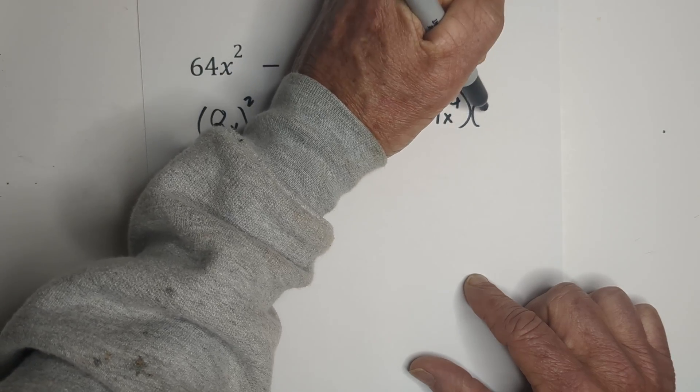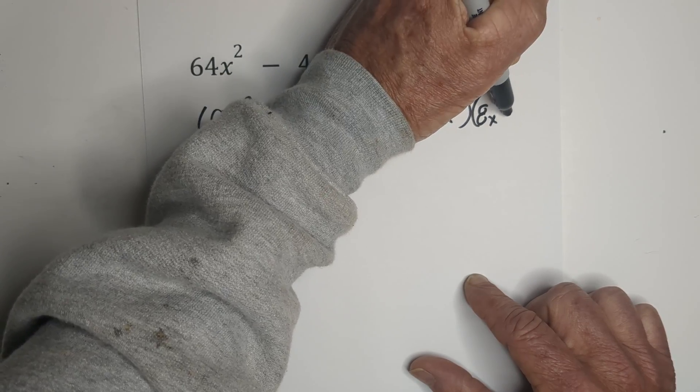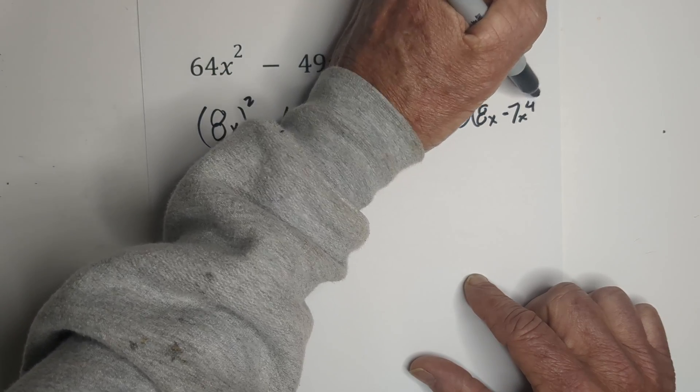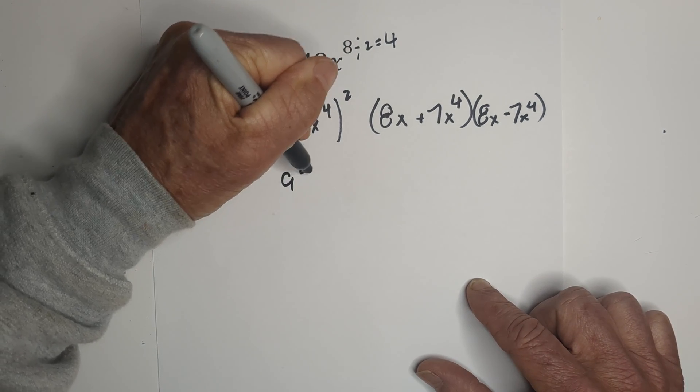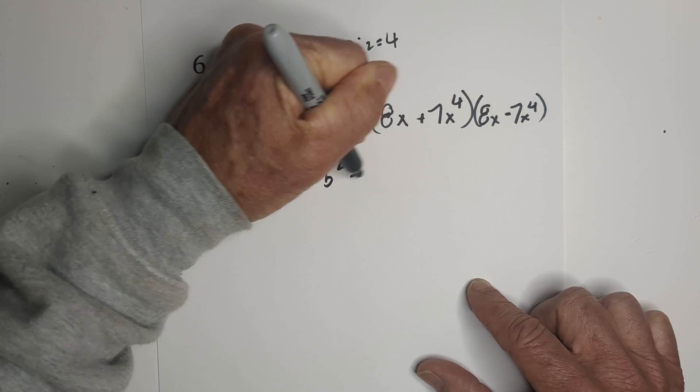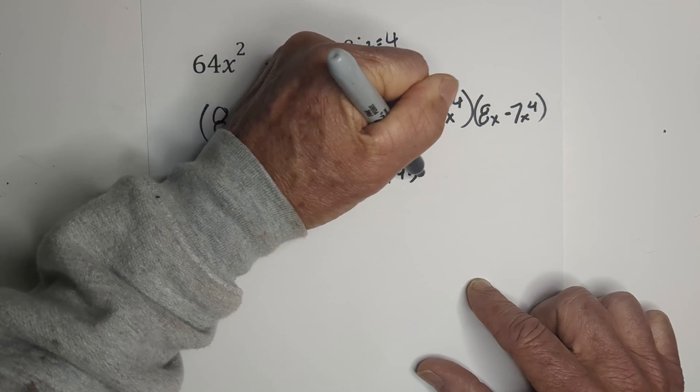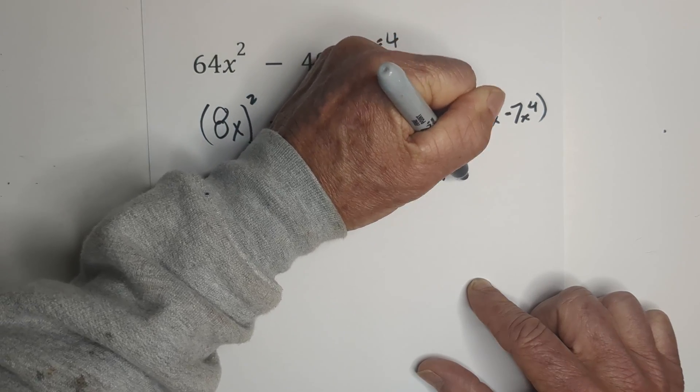Times 8x minus 7x to the 4th. So there we go. Difference of squares. A squared minus b squared can be written a plus b times a minus b.